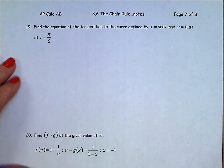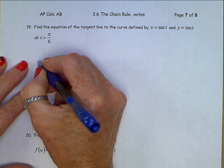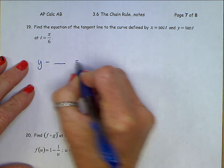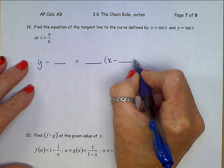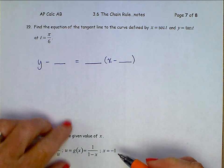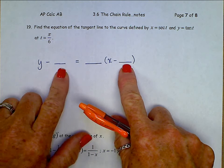So if we start to set this up, we want y minus something equals the slope times x minus something. And for this one, we don't know what x or y is, we only know what the t value is.